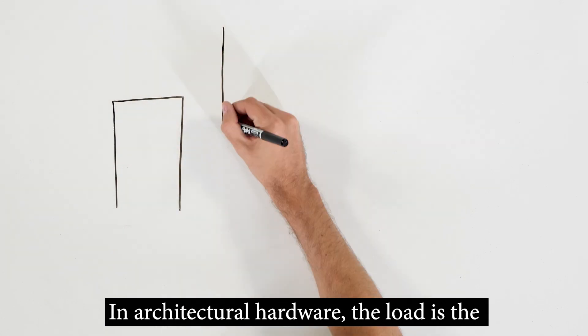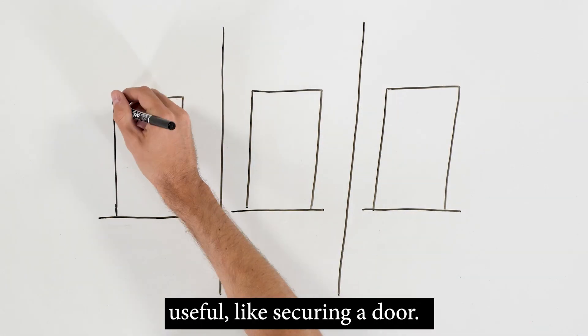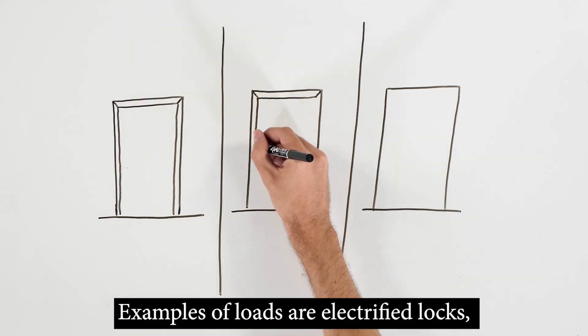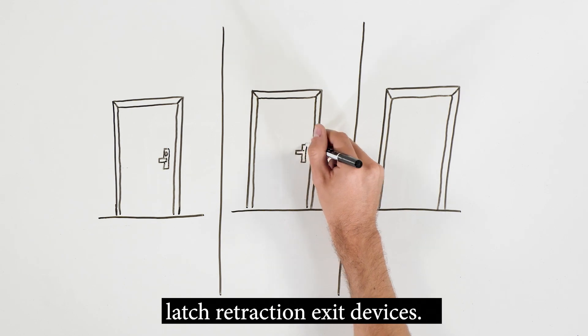In architectural hardware, the load is the product that uses power to do something useful, like securing a door. Examples of loads are electrified locks, electric strikes, and electric latch retraction exit devices.